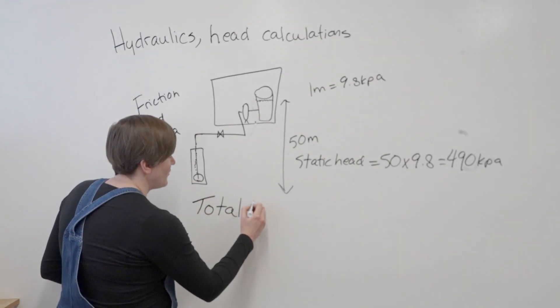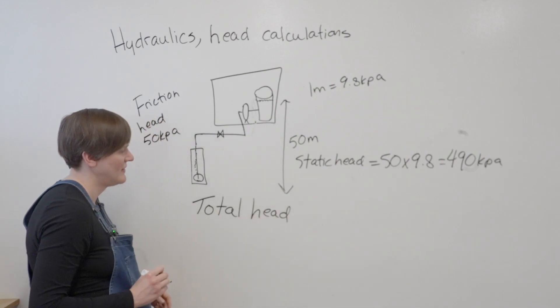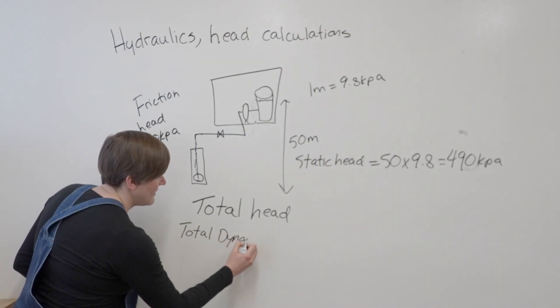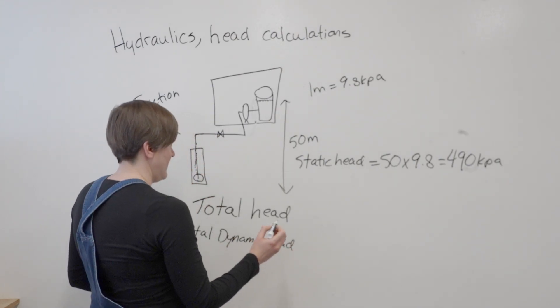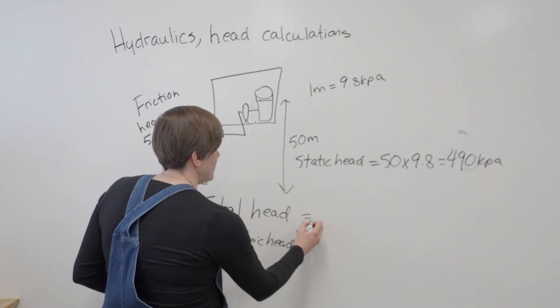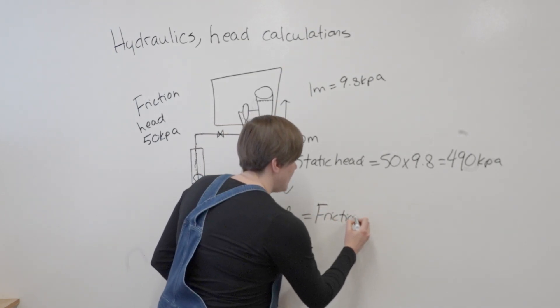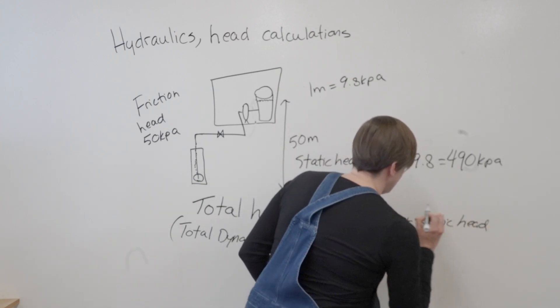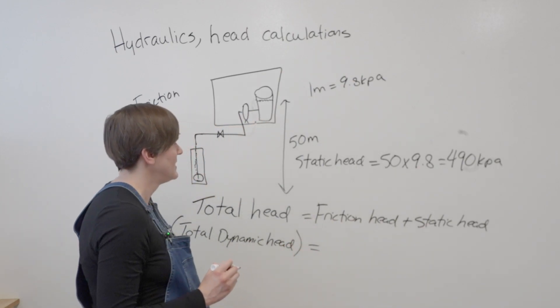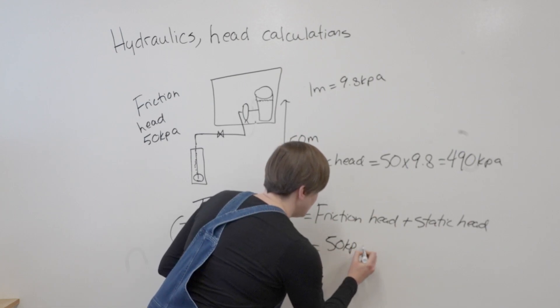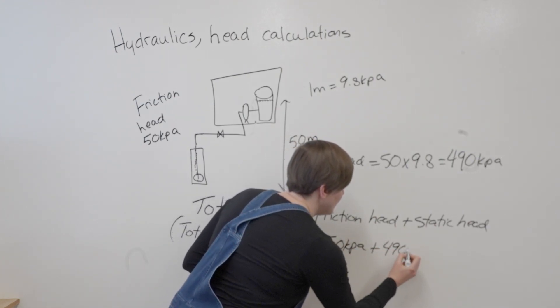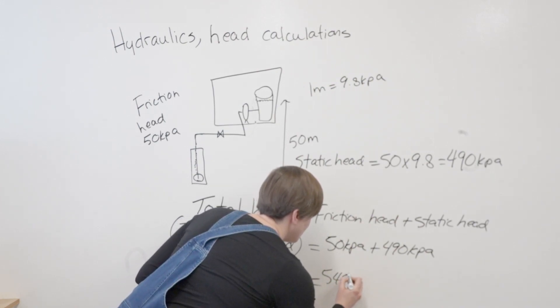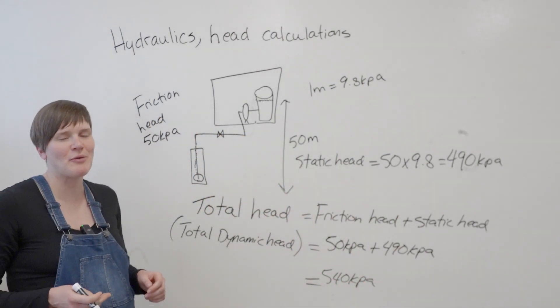Now if we wanted to calculate the total head or you might see it as total dynamic head, we would go friction head plus static head. And so my total would be 540 kPa for my total head or my total dynamic head.